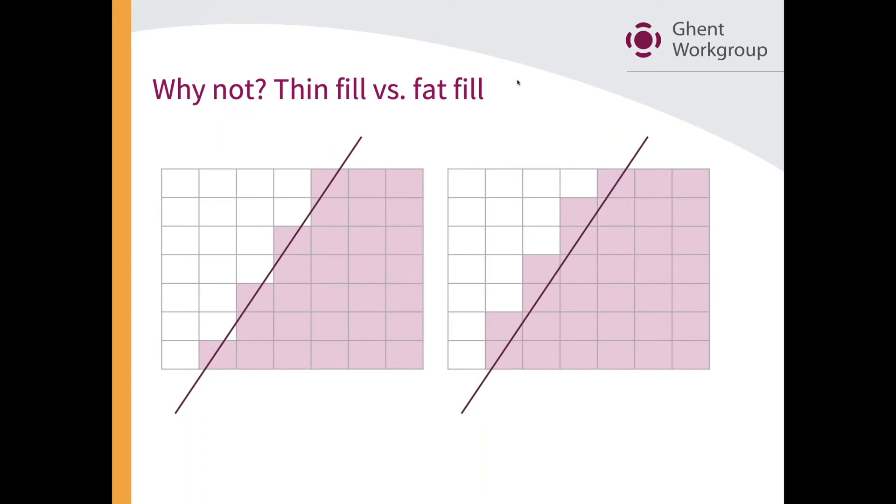Annoyingly, PDF has two different ways of doing that. Text is filled using something called thin fill, and thin fill is what you see on the left. It means that a pixel is colored only if it is covered for more than 50 percent. On the right, you have fat fill, and fat fill says, I don't care, as soon as you hit a pixel, you're going to fill that pixel with the color. You can see that there is a difference between those two slides.